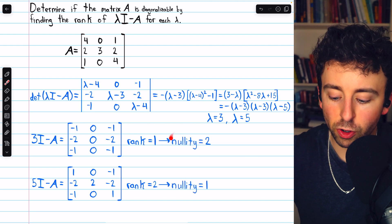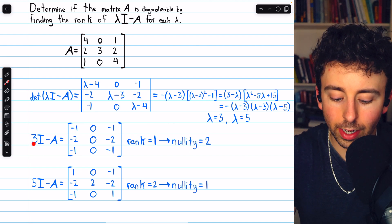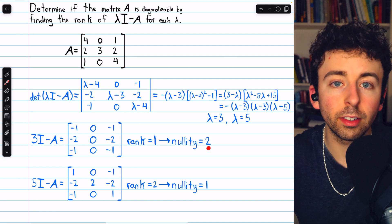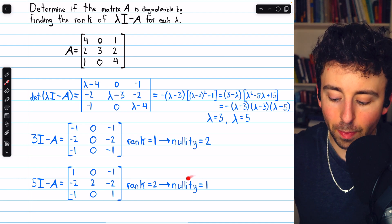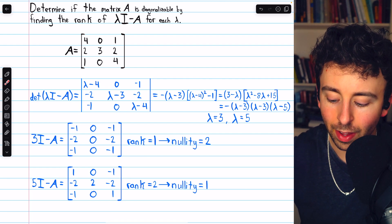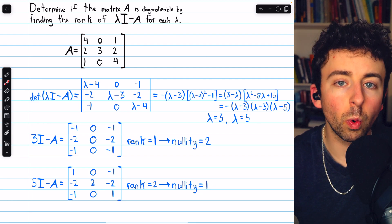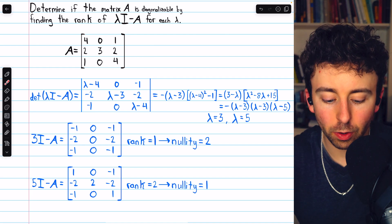This means the dimension of the eigenspace corresponding to lambda equals 3 is 2. So those are two linearly independent eigenvectors. The dimension of the eigenspace corresponding to 5 is 1. So that gives us one linearly independent eigenvector.